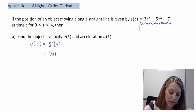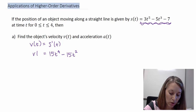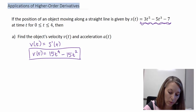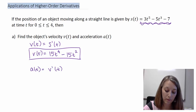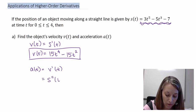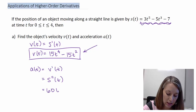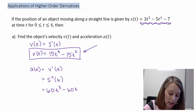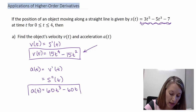Taking the derivative of s of t gives us the velocity: v of t equals 15t⁴ minus 15t². The derivative of the constant is 0. Then, to find the acceleration equation, we take the derivative of the velocity — which is the second derivative of s of t. That gives us a of t equals 60t³ minus 60t, again applying the power rule.